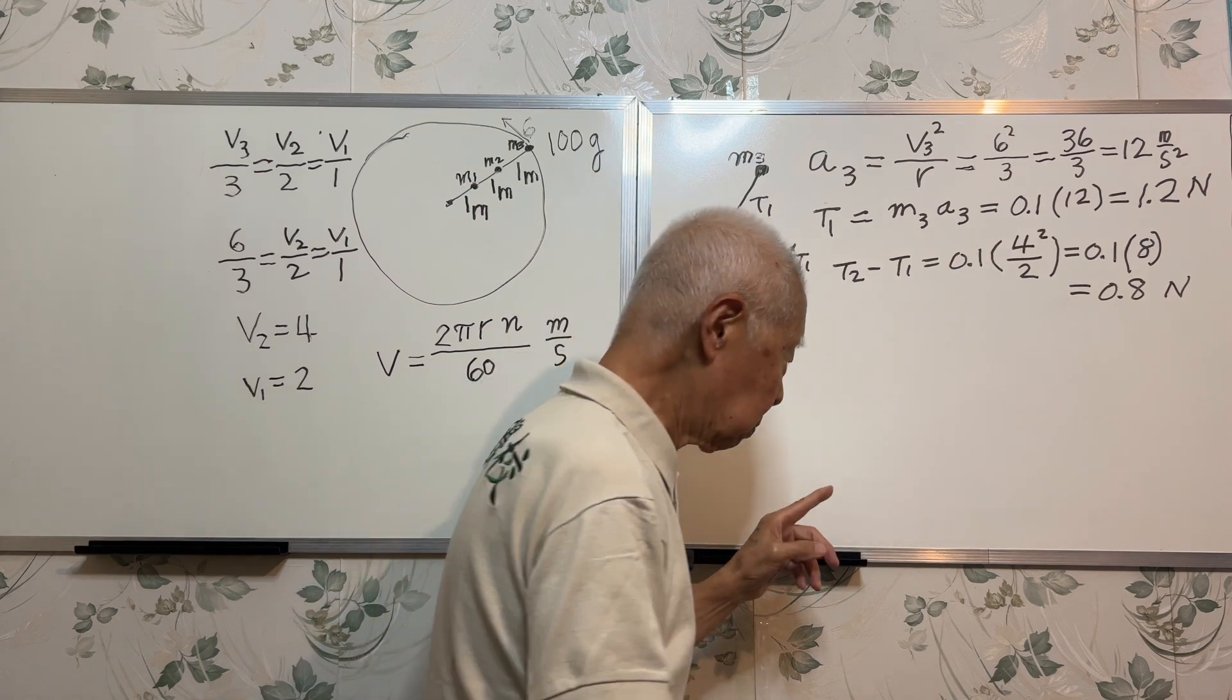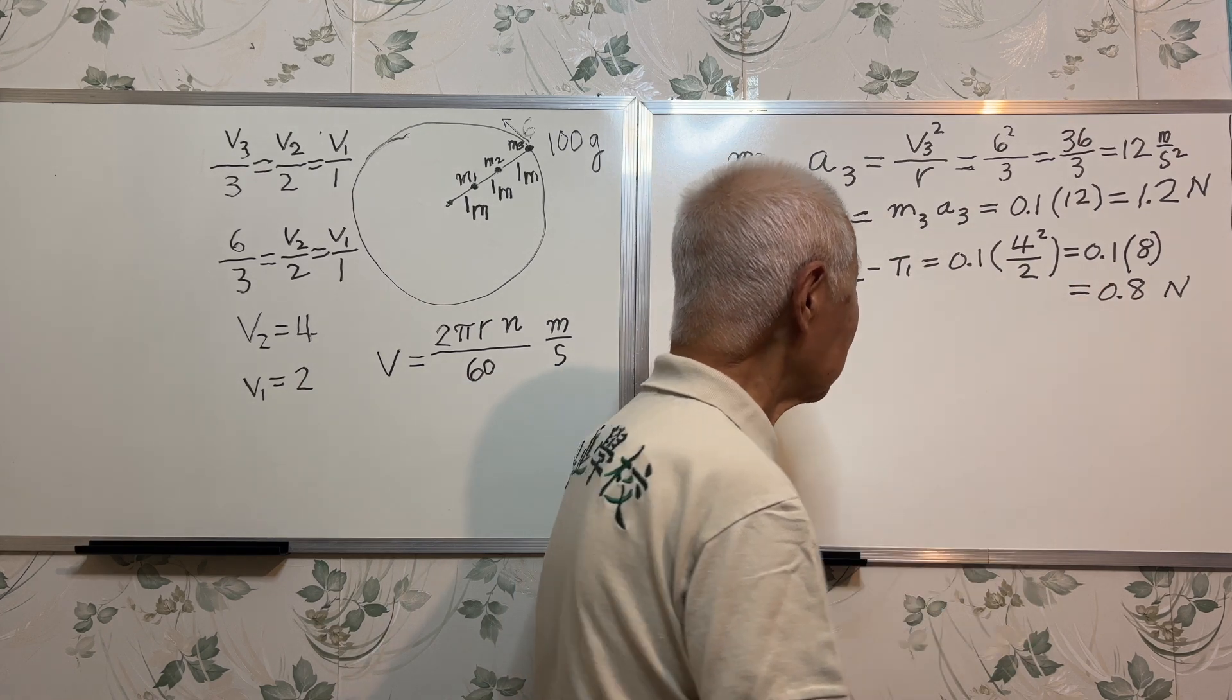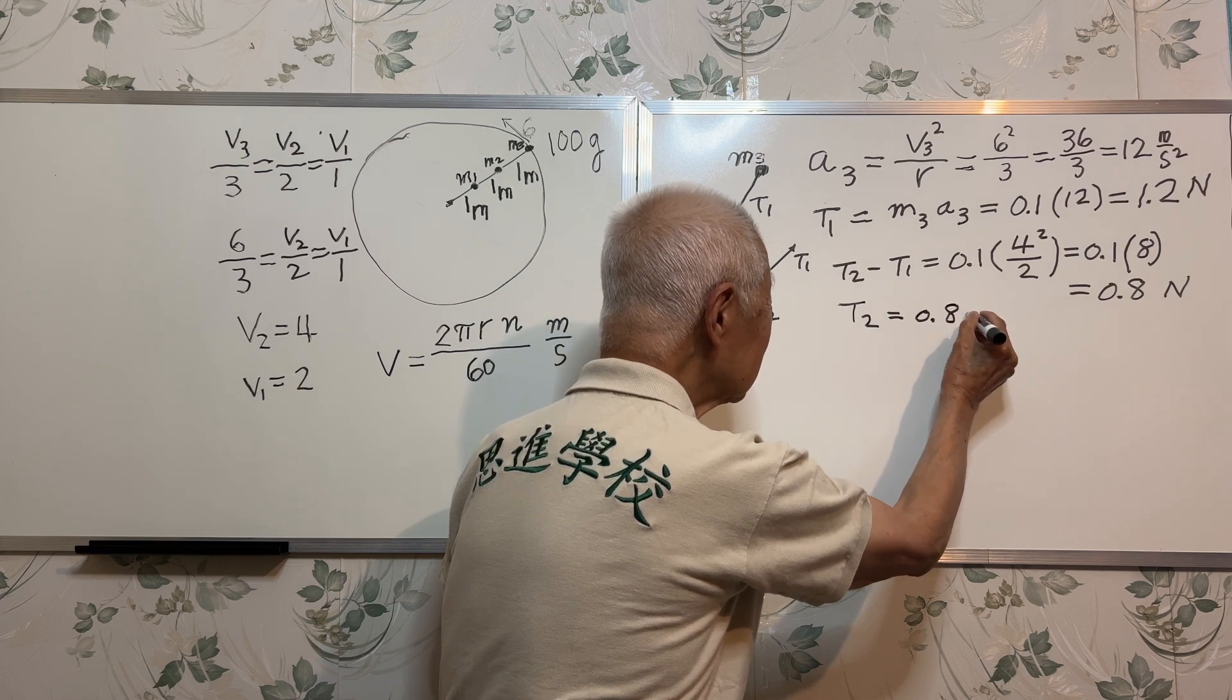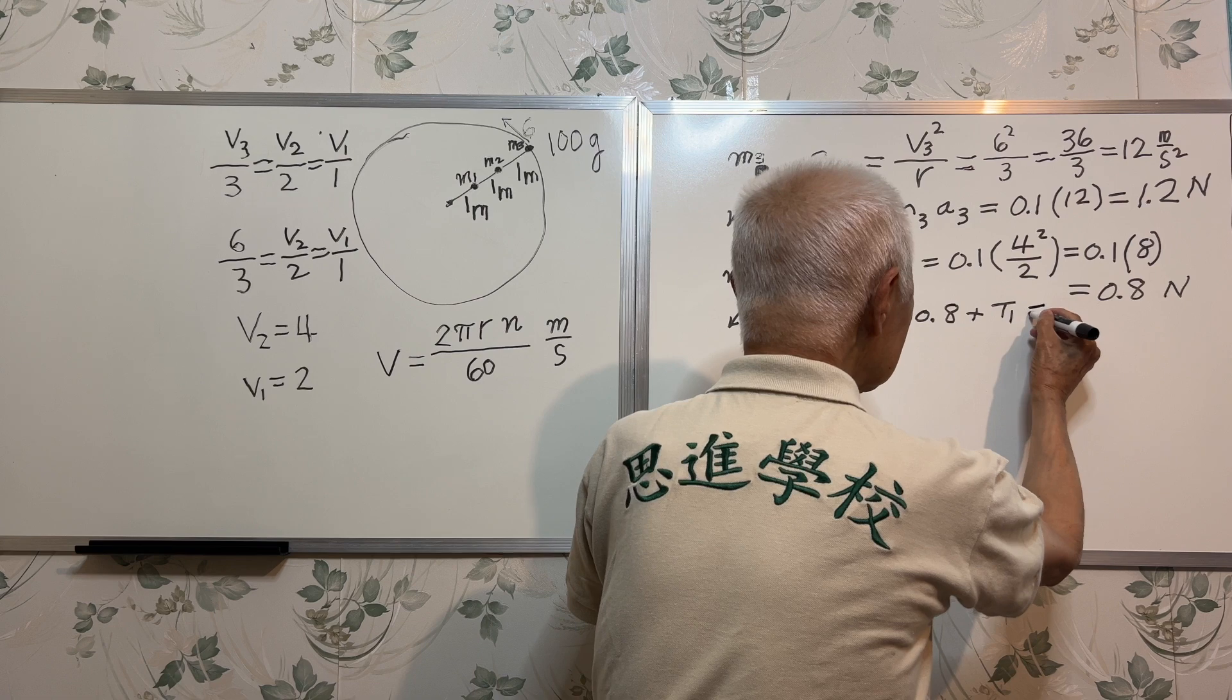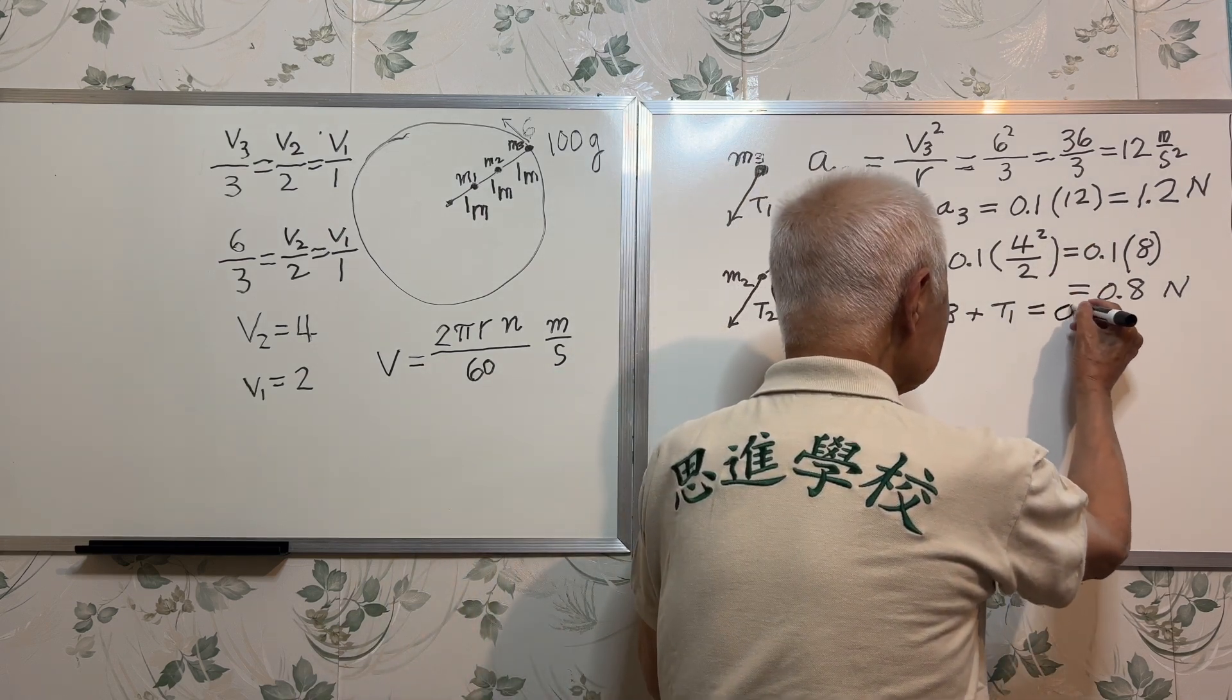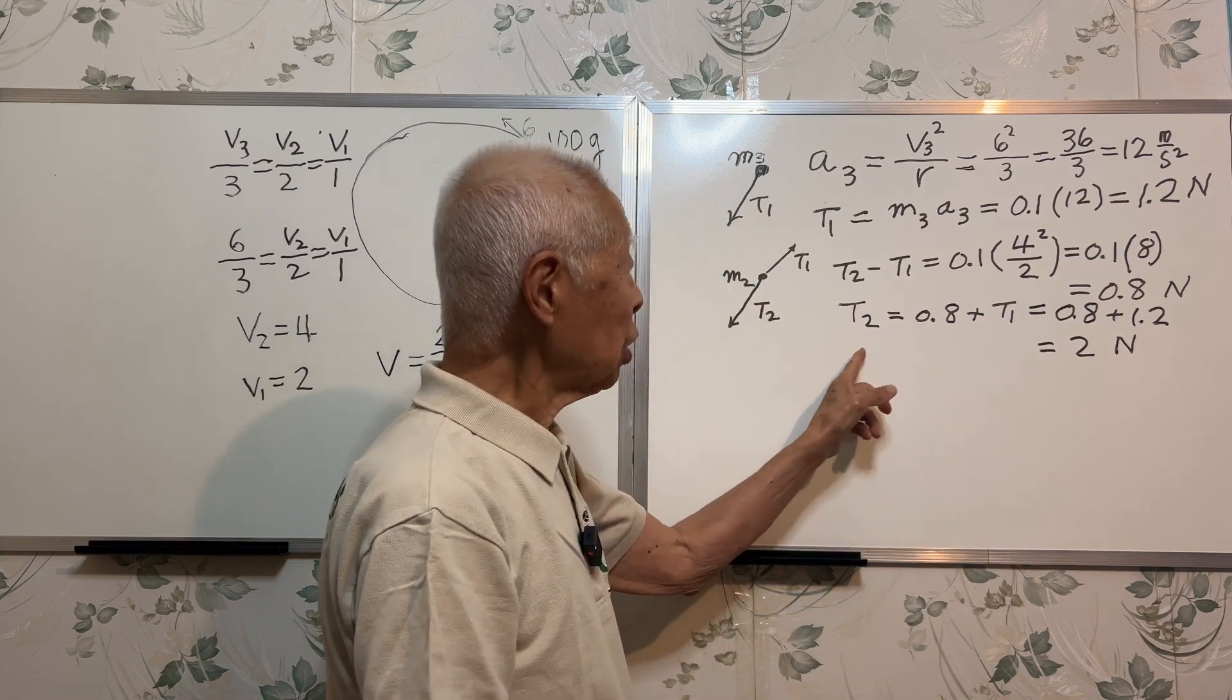Acceleration is v squared over r, and v is 4. v2 is 4, so 4 squared over r is 8. The net force is 0.8. But I want to find T2. Therefore T2 is 0.8 plus T1, but T1 is 1.2, so T2 is 2 newtons.